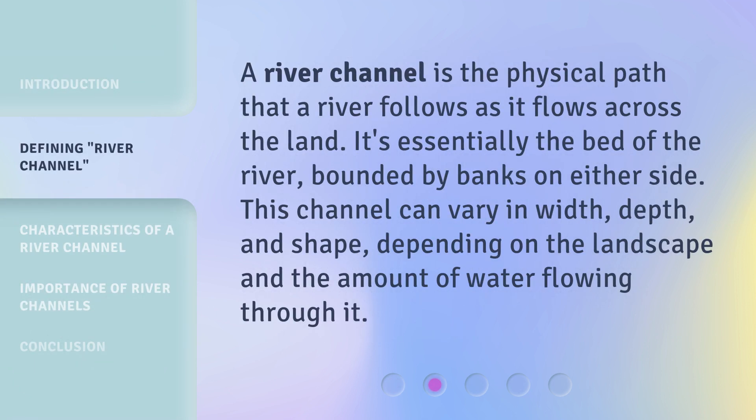A river channel is the physical path that a river follows as it flows across the land. It's essentially the bed of the river, bounded by banks on either side. This channel can vary in width, depth, and shape, depending on the landscape and the amount of water flowing through it.